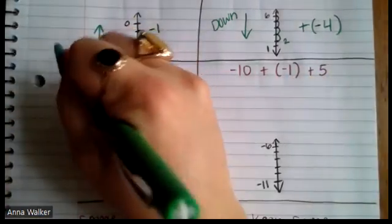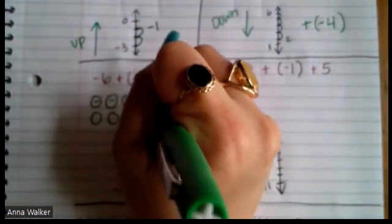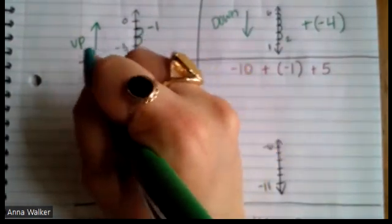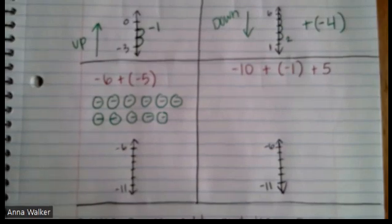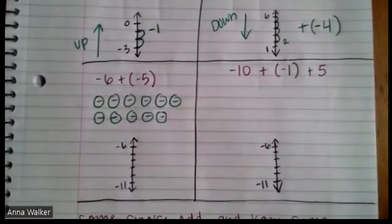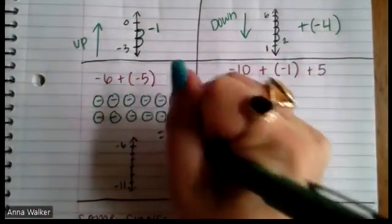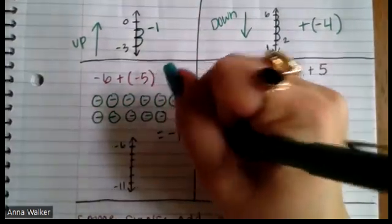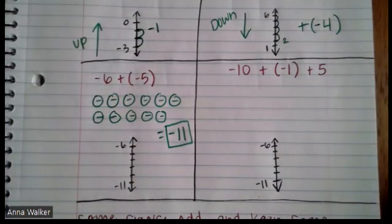I'm going to model this. I have six negatives and five negatives — so essentially whatever six plus five is, that many negatives: one, two, three, four, five, six, one, two, three, four, five. I have all these negatives and no zero pairs to cancel out. So if I count up how many I have, I have negative eleven. Negative six plus negative five is negative eleven.